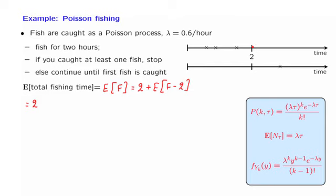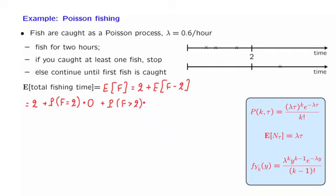There are two scenarios after time two, and we use the total expectation theorem to account for them. The first scenario happens with some probability — the probability that you stop at time two — and in that case the remaining fishing time is zero. But there's the other scenario where you fish for more than two time units, and for that we multiply the probability by the conditional expectation of the remaining fishing time.